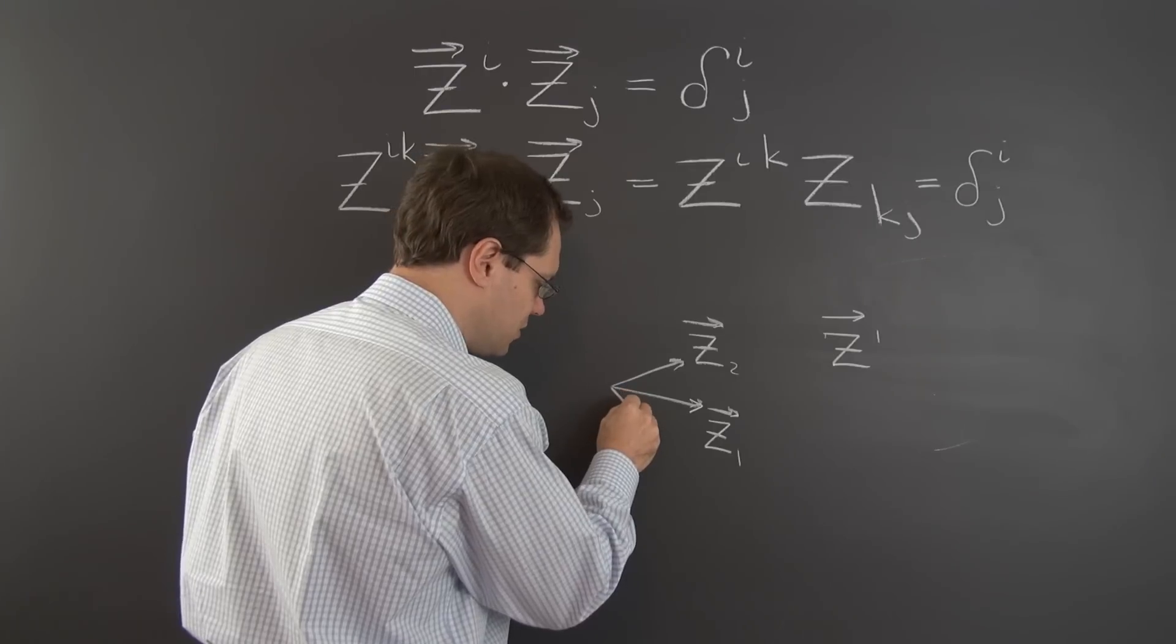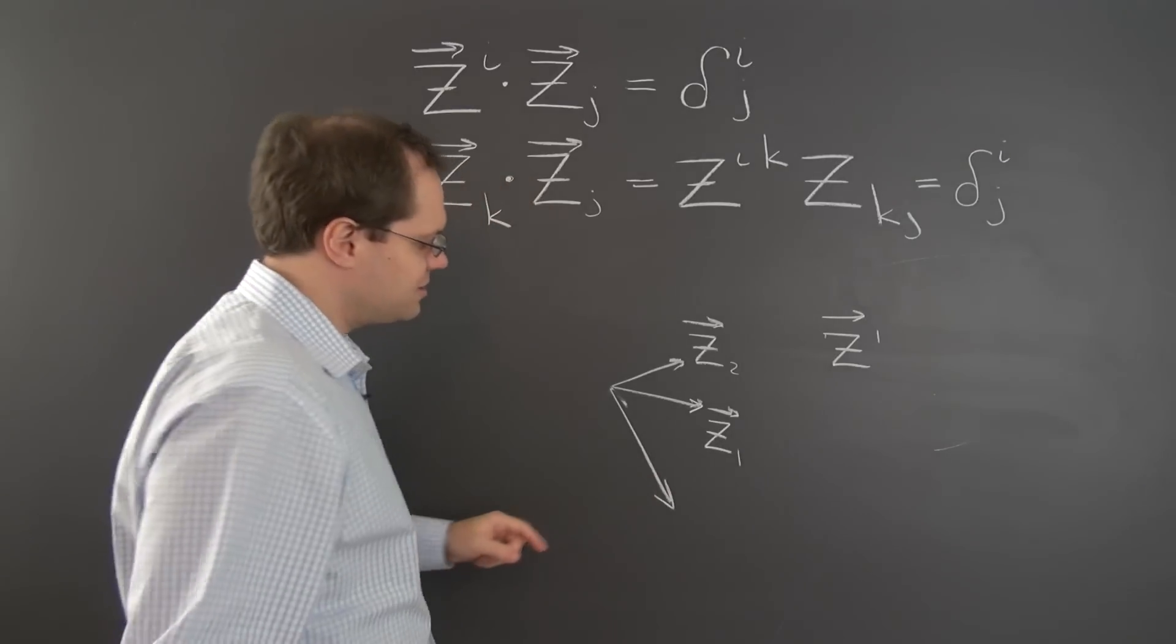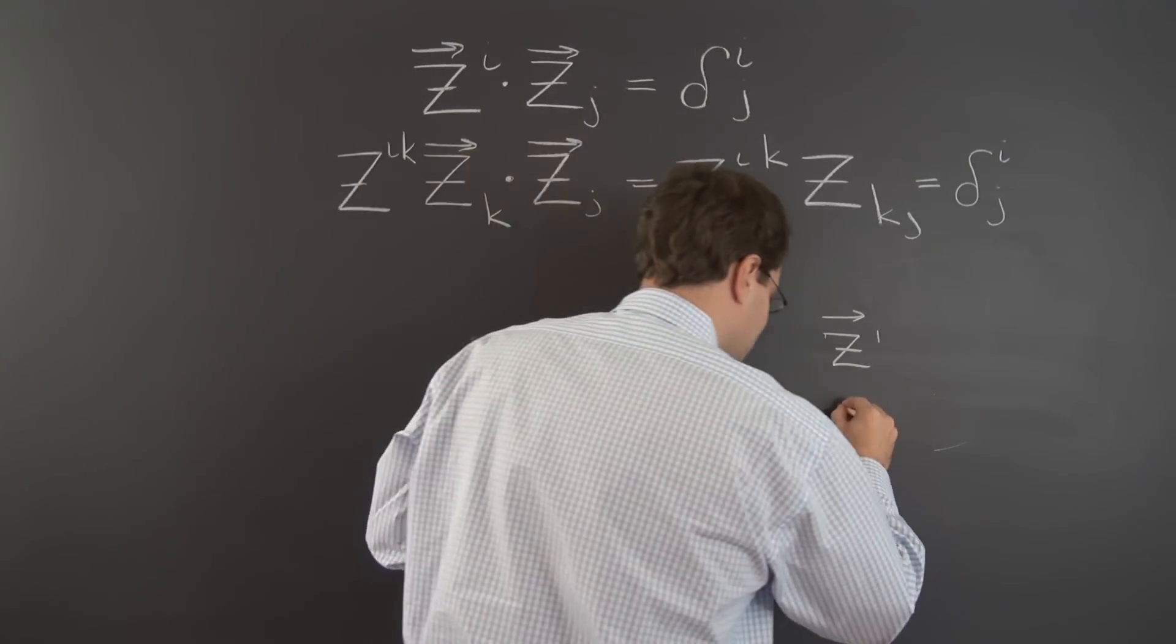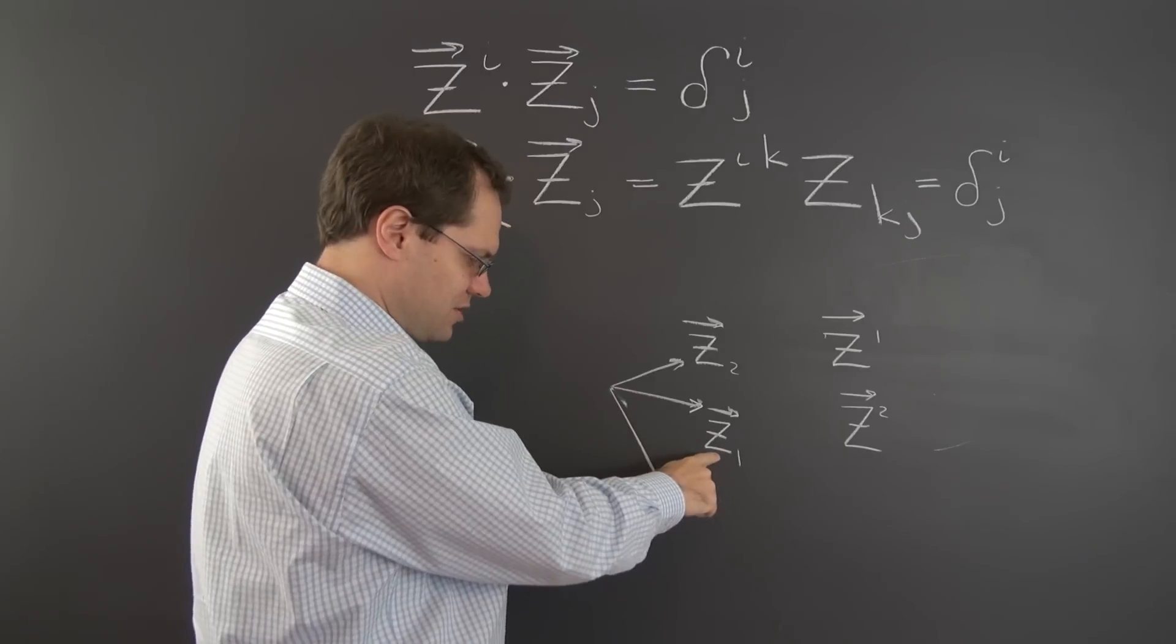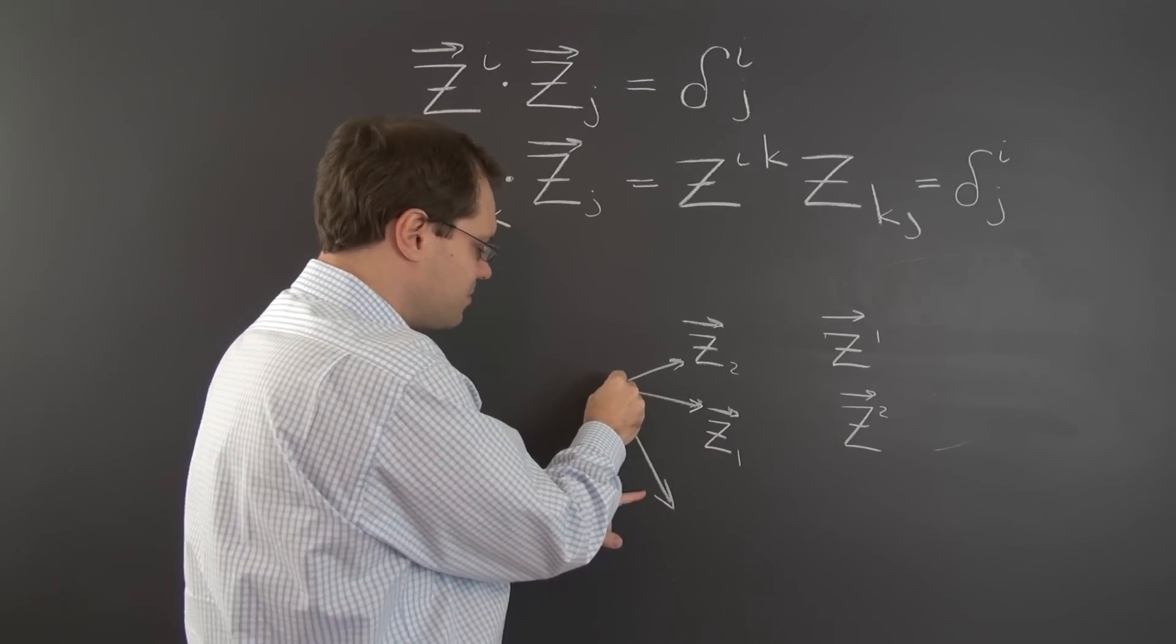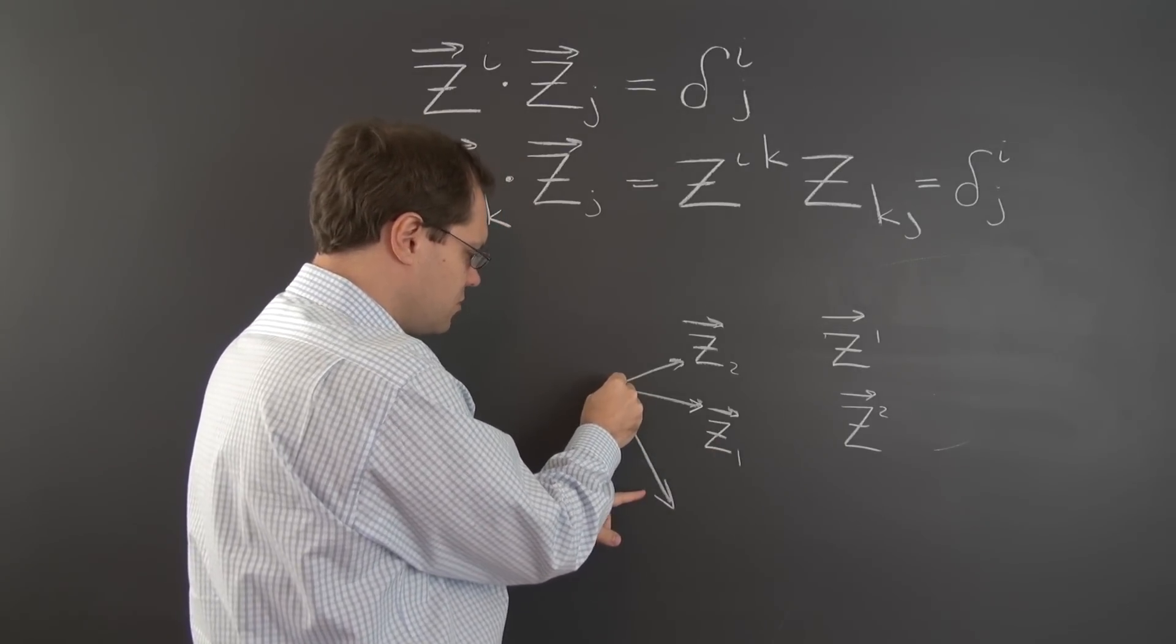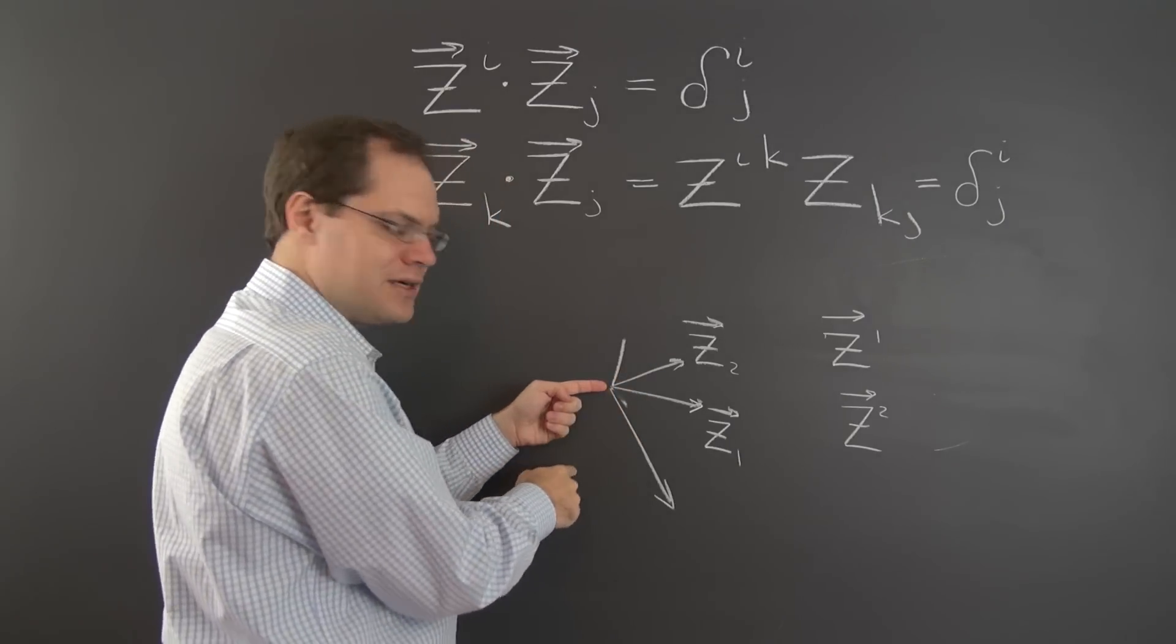And z^2 will be orthogonal to this z_1, to the covariant z_1. And its dot product with z_2 will be 1. So it will look like something like this. You see how I'm not going in the opposite direction?